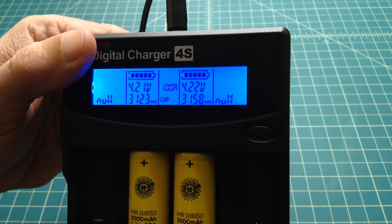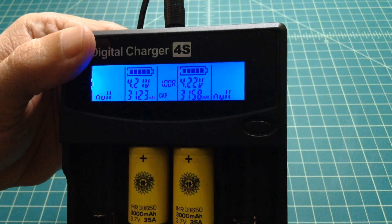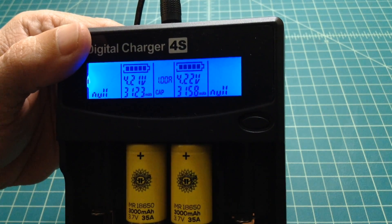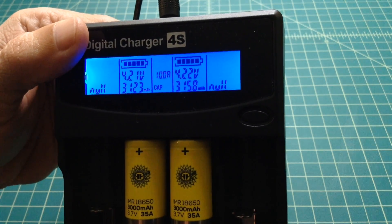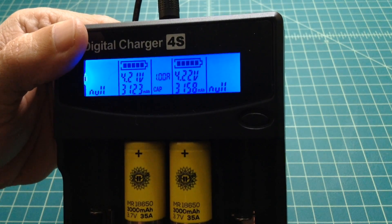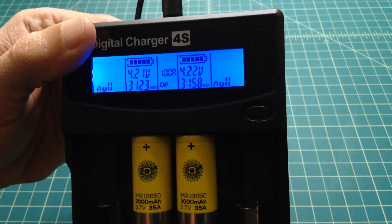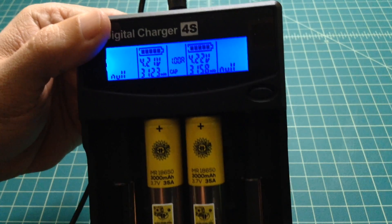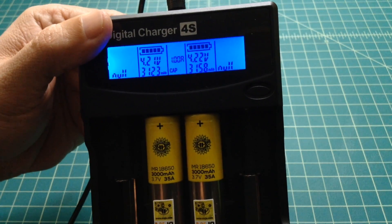And so what you can see is they both charged to 4.2. One is 4.21. One is 4.22, which is expected. And they took 3123 and 3158 milliamp hours, which is great. It means these batteries have exceeded the capacity that they're advertised for.